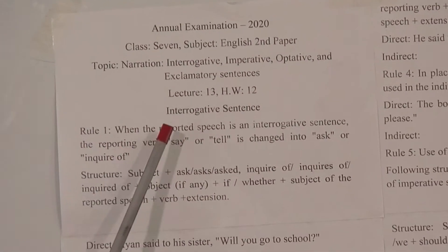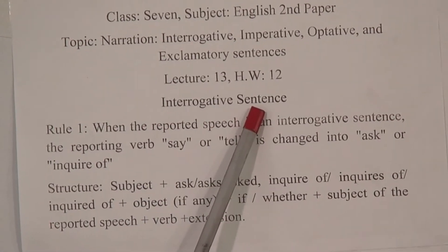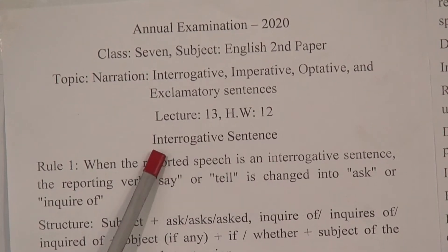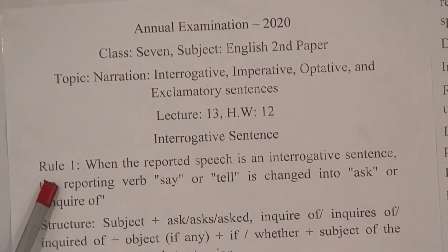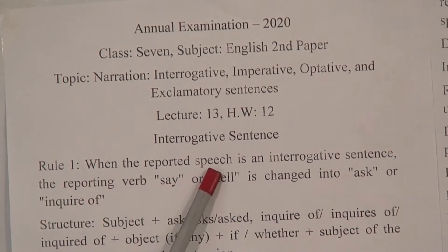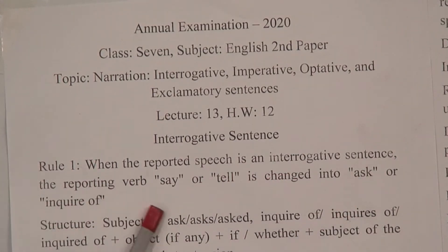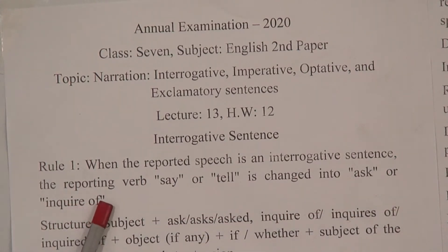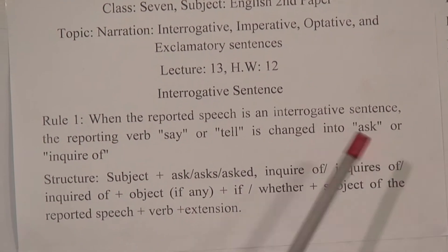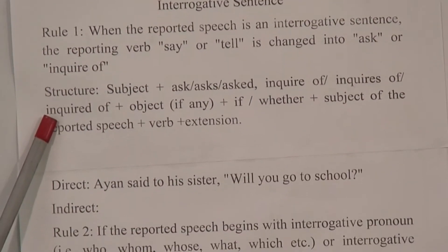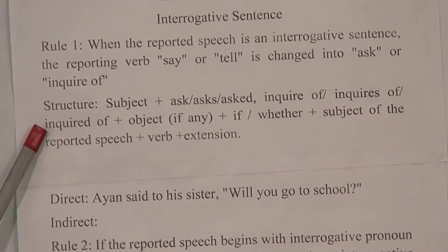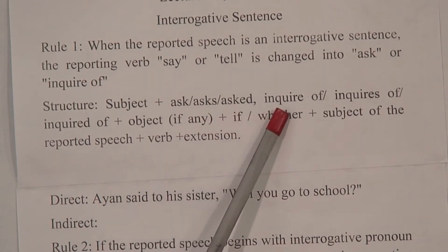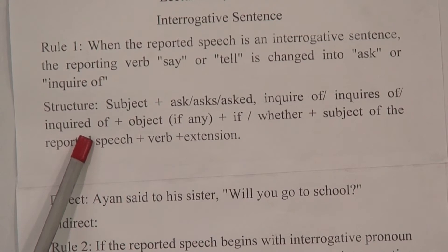Number one — at first, rules. Look at the title: it is written 'Interrogative Sentence.' I have written only 'I' and 'T' as a short form. Rules number one: when the reported speech is an interrogative sentence, the reporting verb 'say' or 'tell' is changed into 'asked' or 'inquired of.' Look at the structure — subject plus 'ask/asks/asked' or 'inquire/inquires/inquired of.'